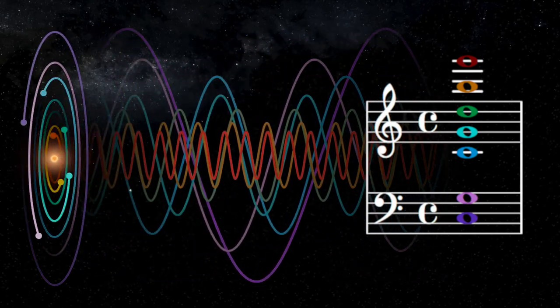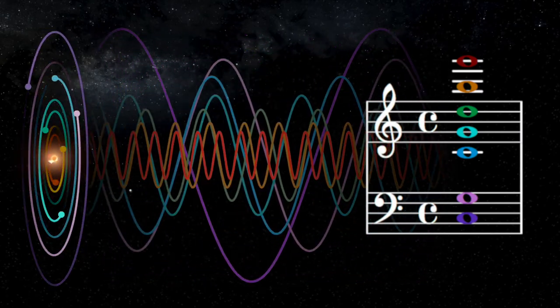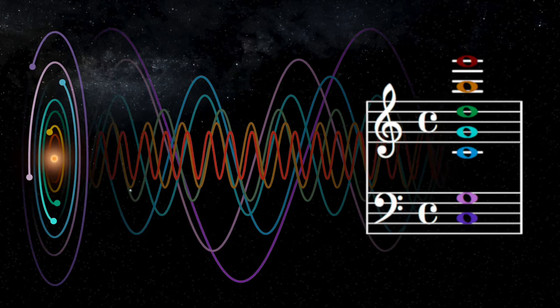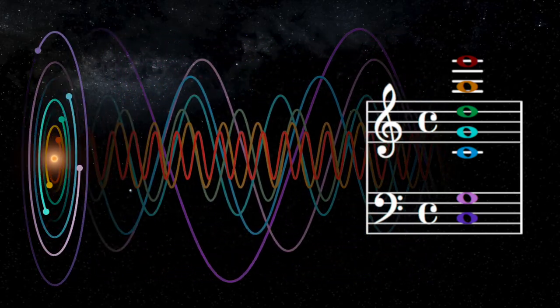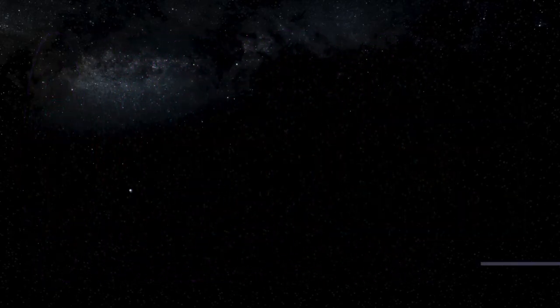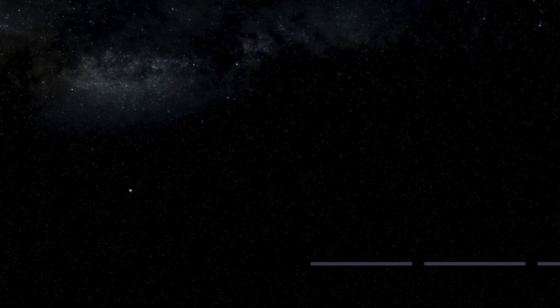That's when we realized that this remarkable pattern would produce striking rhythms and harmonies if we could translate the planets' motion into music. So we used a numerical simulation to play a note for every orbit of the outer planet.